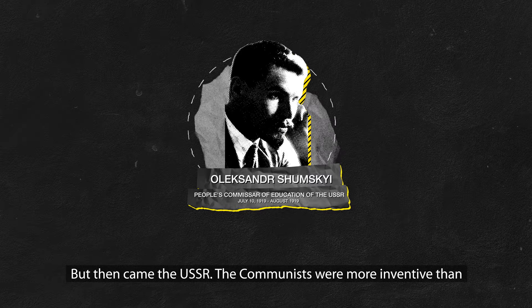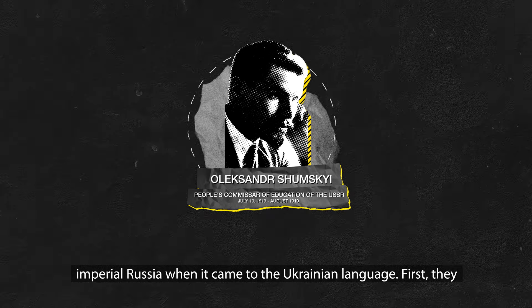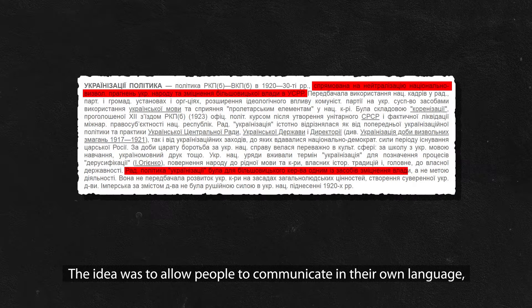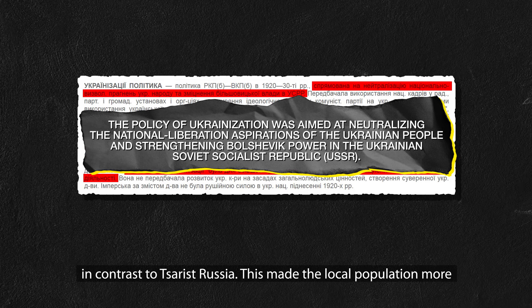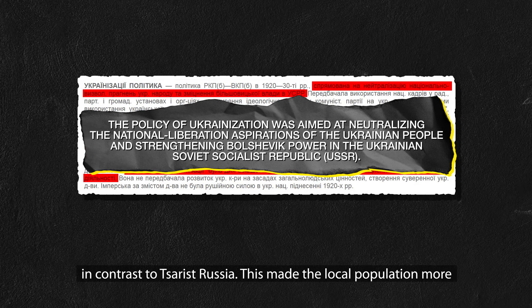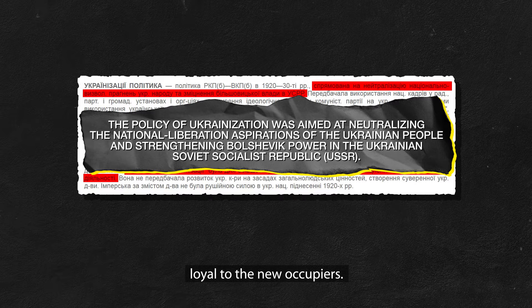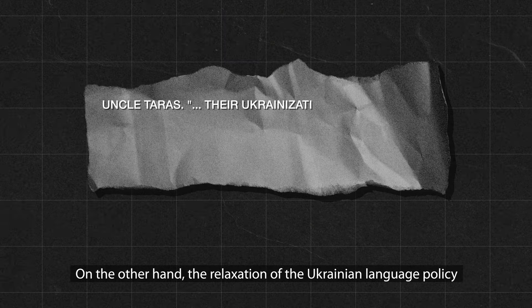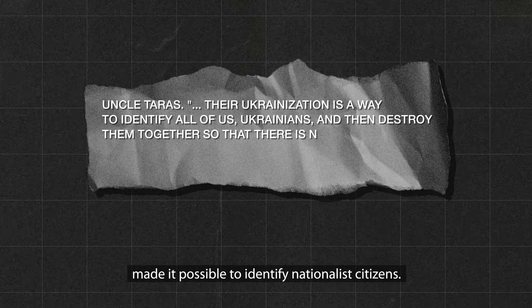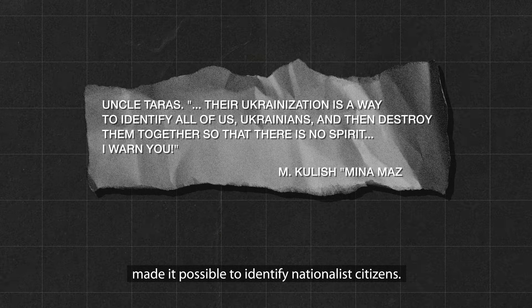The communists were more inventive than imperial Russia when it came to the Ukrainian language. First, they implemented the so-called Ukrainianization policy — the idea being to allow people to communicate in their own language. In contrast to Tsarist Russia, this made the local population more loyal to the new occupiers. On the other hand, the relaxation of the Ukrainian language policy made it possible to identify nationalist citizens.